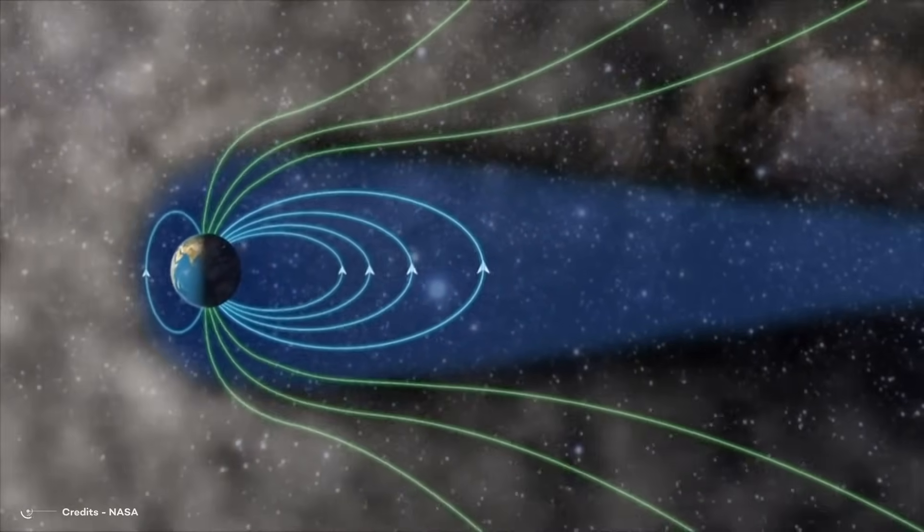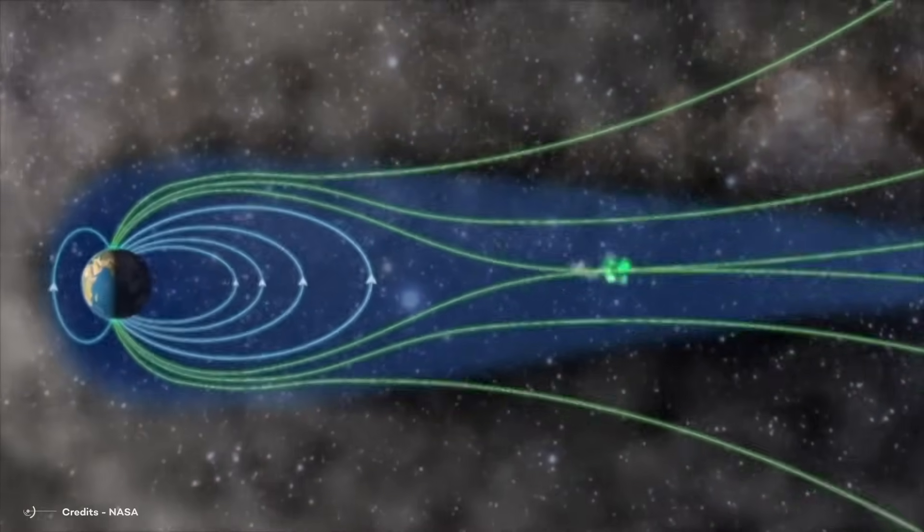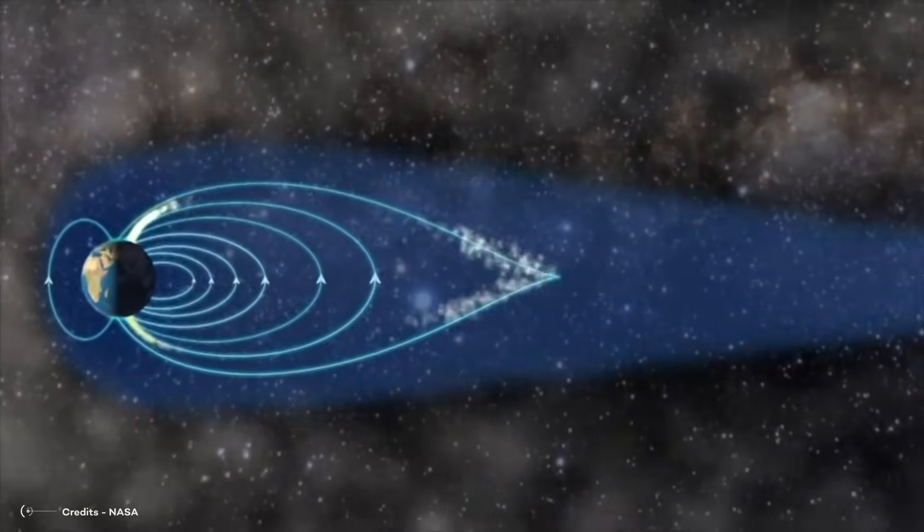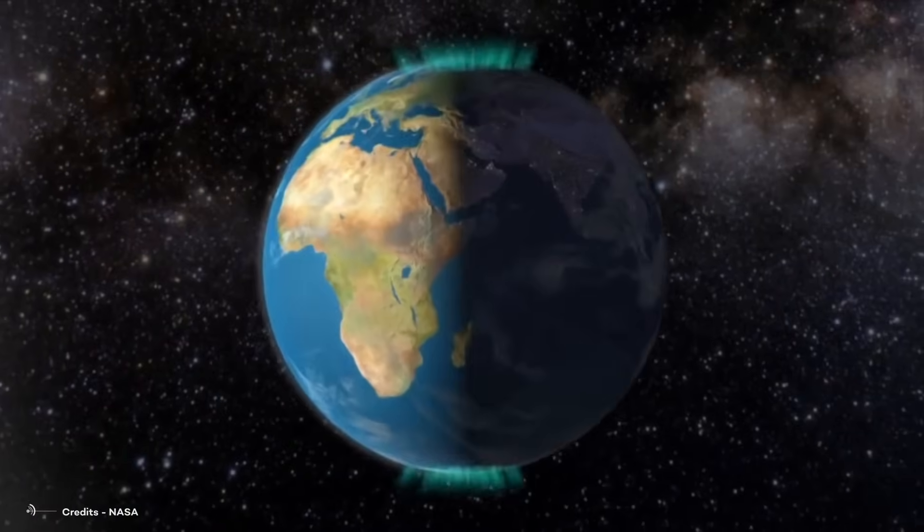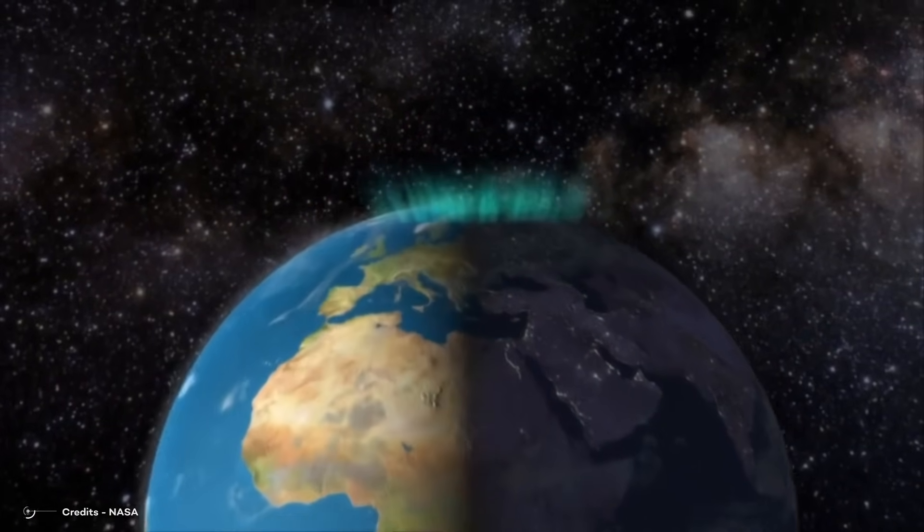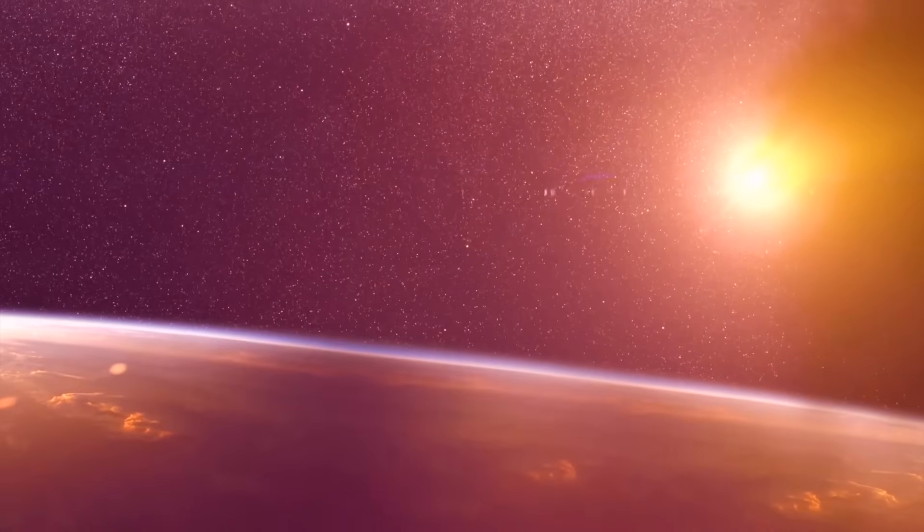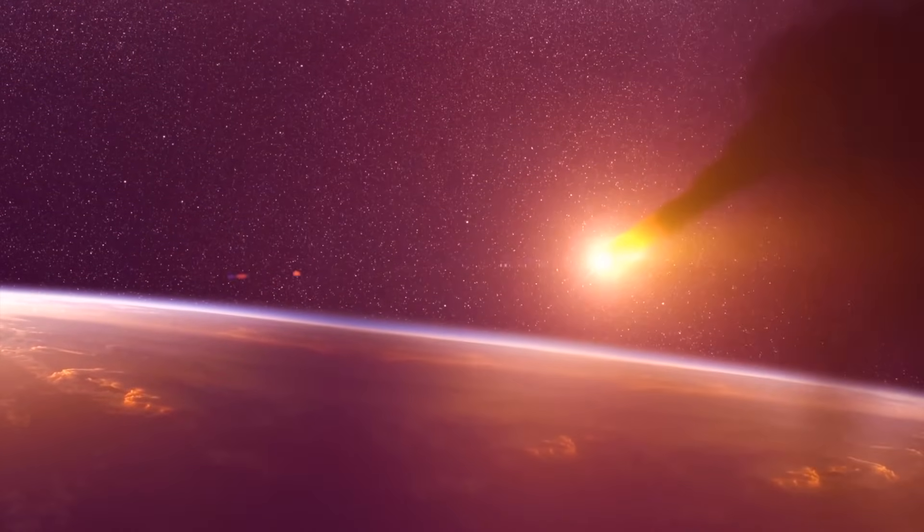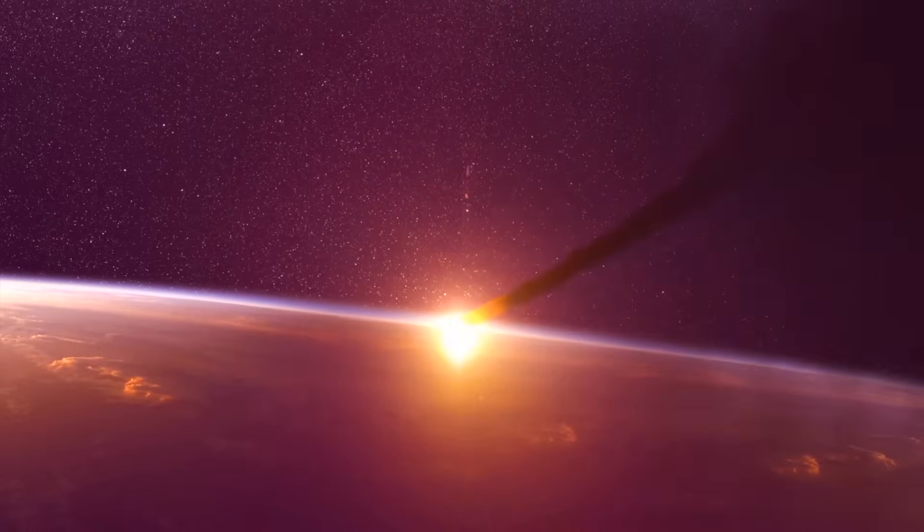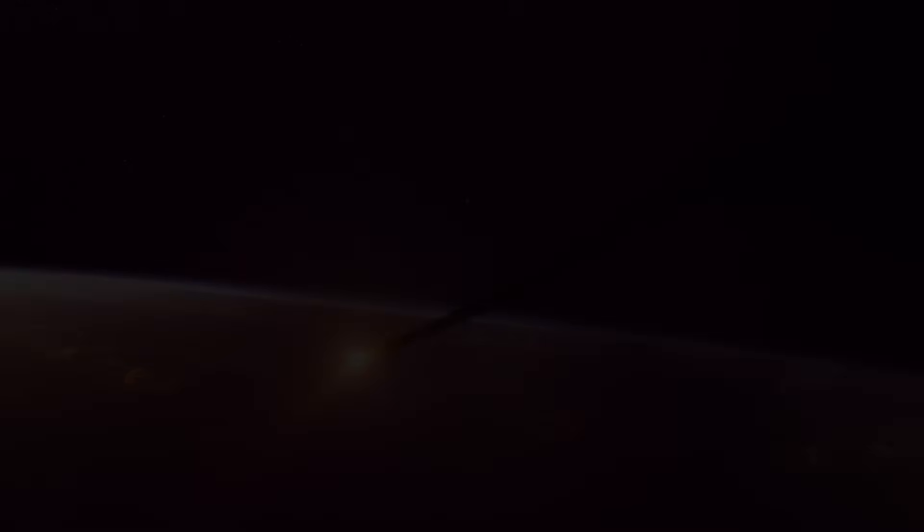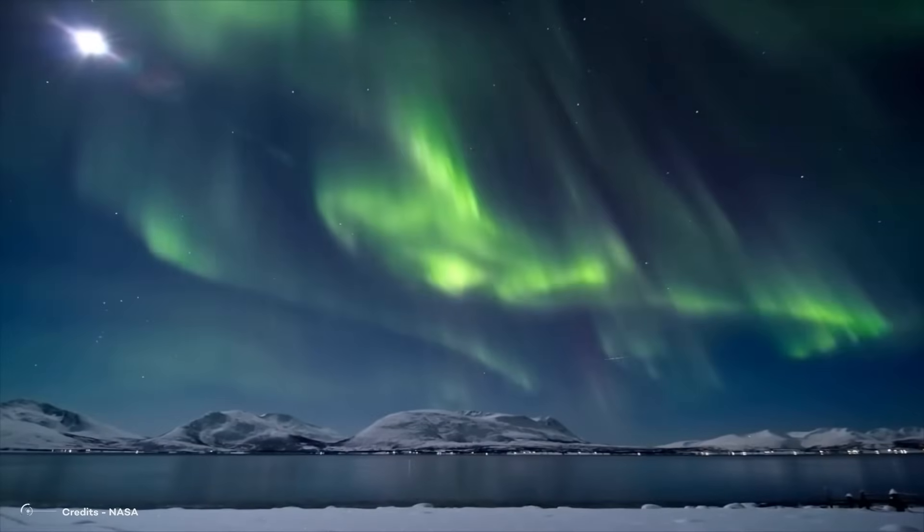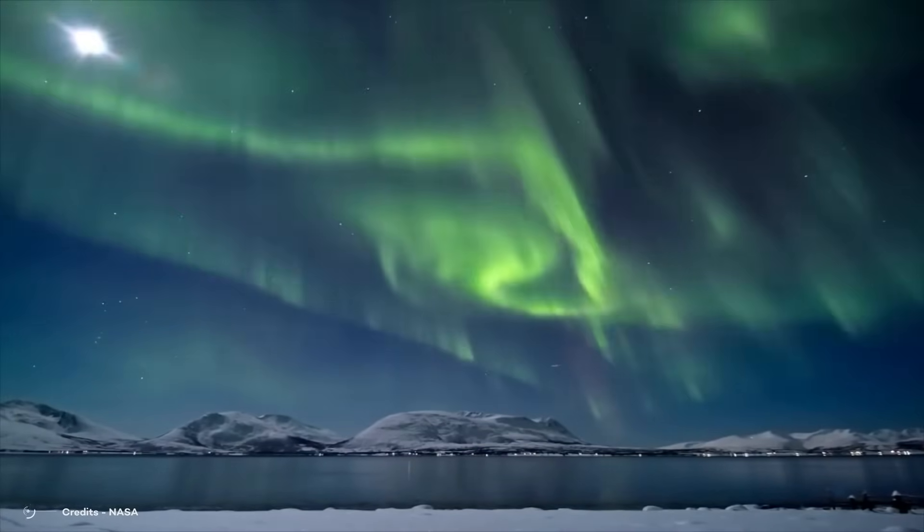However, it may surprise you to learn that these reversals could potentially be influenced by external factors, like meteorite or comet impacts. Yes, you heard it correctly. Although highly improbable, there exists a slim possibility that an impact from a meteorite or comet or even a more subtle event such as the melting of polar ice caps could act as a trigger for a reversal in the Earth's magnetic field.